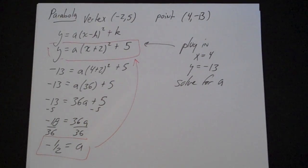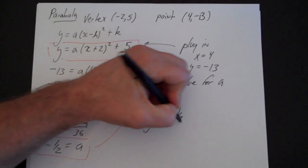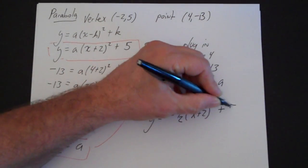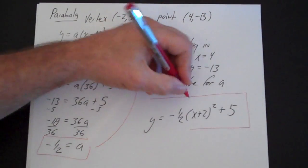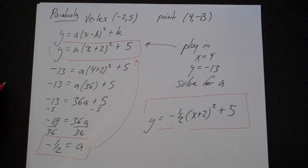I just go back to that part of the problem and plug a in. And I get y = -1/2(x + 2)² + 5. And that is my equation. This equation of a parabola with vertex (-2, 5), it opens down and it is relatively wide. And that is how you find the equation of a parabola given a vertex and a point.